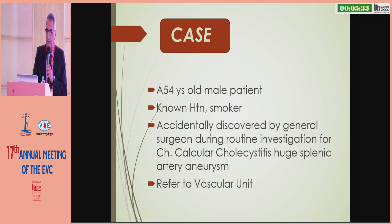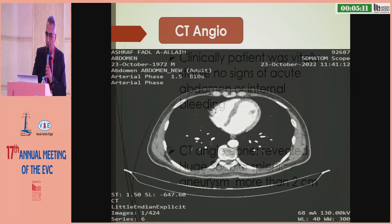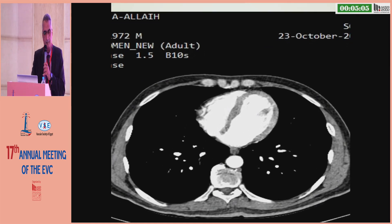Our case is a 54-year-old male patient, non-hypertensive smoker, accidentally discovered by a general surgeon during routine investigation for calcular cholecystitis. He was referred to our unit. The patient was stable clinically with no signs of acute or internal bleeding. CT angiography revealed a saccular splenic artery aneurysm.